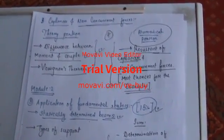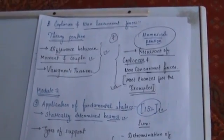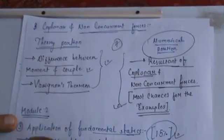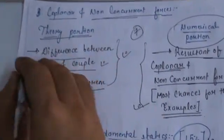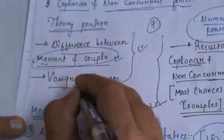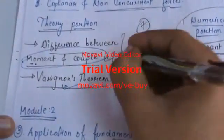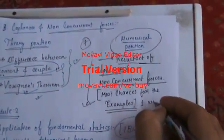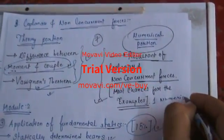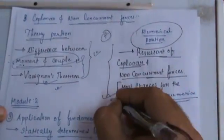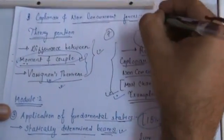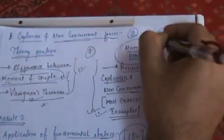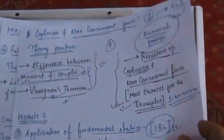The module also contains coplanar and non-concurrent forces. In the theory portion there are only 2 theories: the difference between moment and couple, and Varignon's theorem. You can only expect rare theory questions from this chapter, but a numerical on the solution of coplanar and non-concurrent forces has a 99% probability of being asked, worth 7 marks.